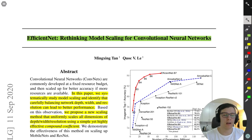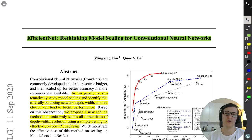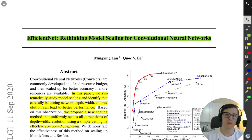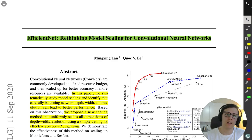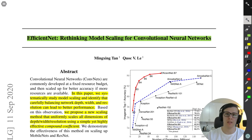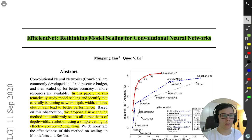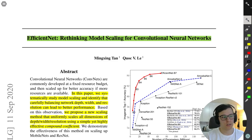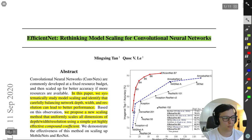Welcome back to another video. In this one, we're going to take a look at EfficientNet: Rethinking Model Scaling for Convolutional Neural Networks. This is one of those papers you've probably heard of, and the idea is pretty simple. We'll go through the paper, and I'll also explain tricks from other papers it uses, so you'll have a decent understanding of EfficientNet. In the next video, I'm going to implement this from scratch as well.